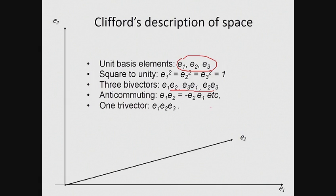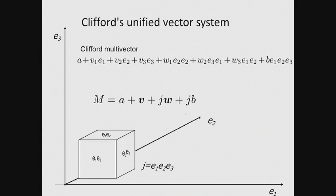The tri-vector, another composite quantity, also squares to minus one and is also a commuting quantity, and so does a natural geometric replacement for the unit imaginary. Further, we can combine all these components to form a general object called a multi-vector. Using bold symbols V and W to represent three component vectors, we can produce a more compact form for the multi-vector, as shown.